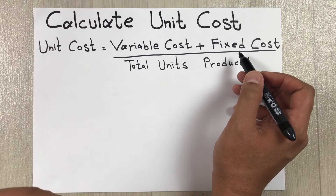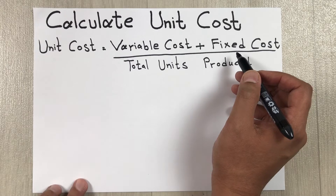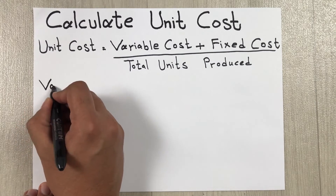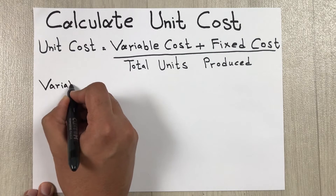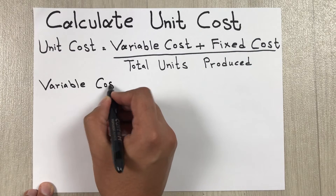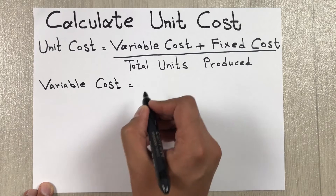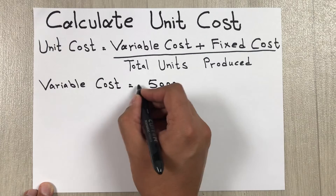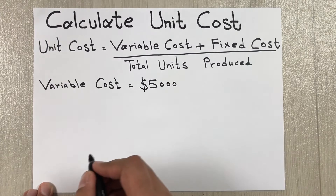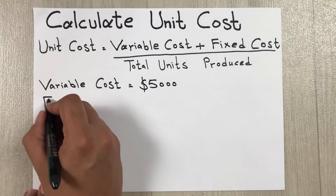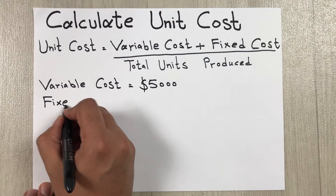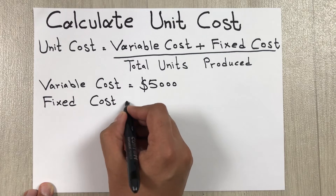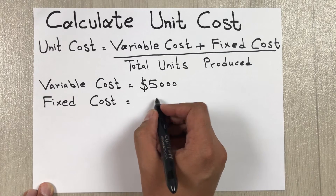Those are the examples of fixed cost. So let's say our variable cost is equal to five thousand dollars, and our fixed cost is equal to eight thousand dollars.